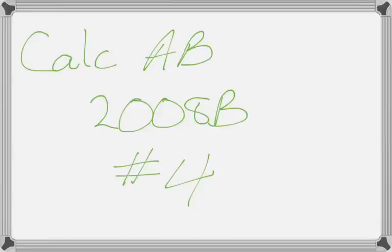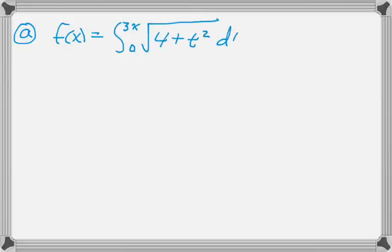This is number 4 from the 2008 Form B Calc AB exam, and you're just given a function and need to do some stuff for it. The function is f of x, which is the integral from 0 to 3x of the square root of 4 plus t squared dt.